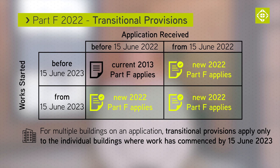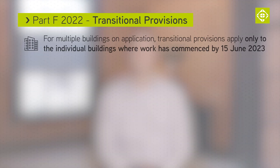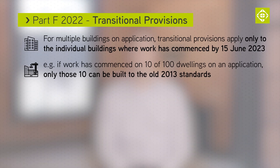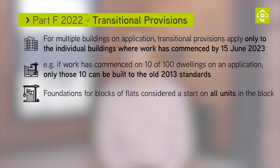On an application for 100 dwellings, the application must be submitted by 15 June 2022 and work on all 100 units must be commenced by 15 June 2023. If only 10 dwellings have started, only these can be built to the old standard and the remainder must meet the new 2022 Part F. Foundations for blocks of flats are considered a start on site for all the units within the block.